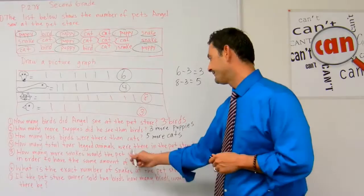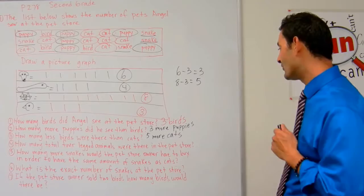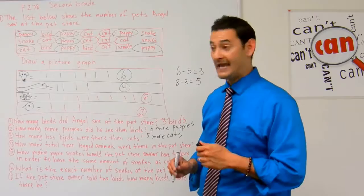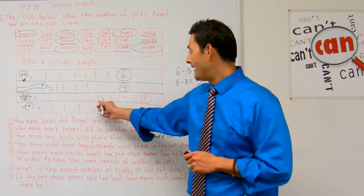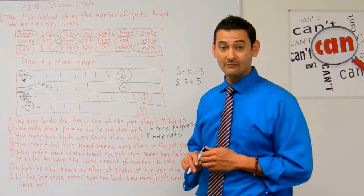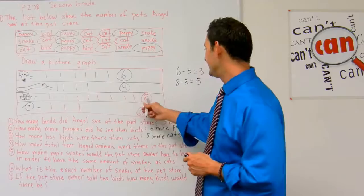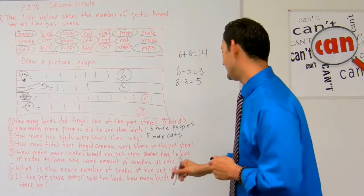Number four reads: how many total four-legged animals were there in the pet store? Are dogs four-legged animals — yes. Are snakes four-legged animals — no. Are cats four-legged animals — yes. Are birds four-legged animals — no. So we add the puppies and the cats: six plus eight equals 14. He saw 14 four-legged animals.